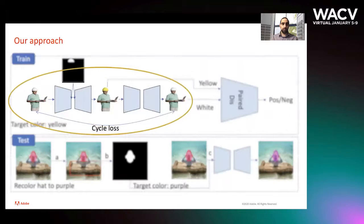We also apply cycle loss: if we recolor the helmet to yellow and then recolor it back to white, we end up with the same image. So we can apply cycle consistency loss here.